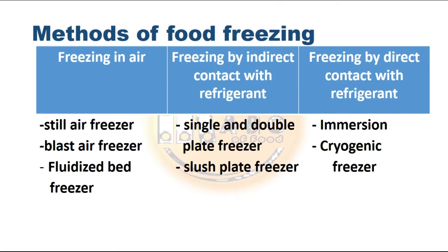The third chill food category is 0°C to +8°C, which includes fully cooked meats, uncooked cured meats, butter, hard cheese, cooked rice, fruit juices, and soft fruits. There are three basic freezing methods in commercial use: first is freezing in air, second is by indirect contact with refrigerant, and third is freezing by direct contact with refrigerant.